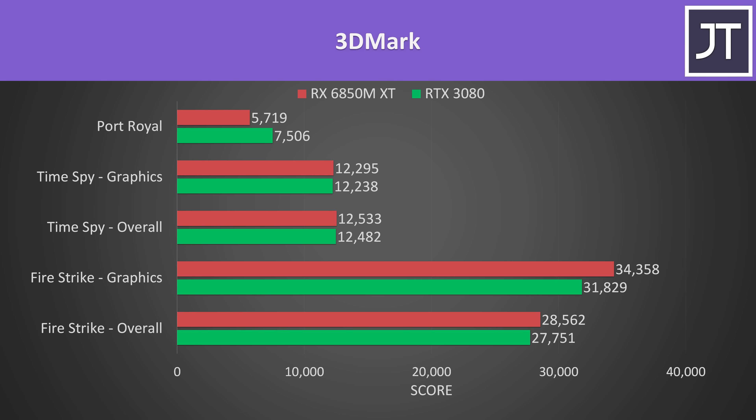The 3DMark results don't really match up with what we saw in the games. In Firestrike and Timespy the RX 6850M XT was ahead, though it had lower ray tracing performance compared to the 3080 in the Port Royal test. At 1080p the RTX 3080 was about 9% higher than the 6850M XT in the gaming results. When I previously compared the 3080 against the 6800M I found they were basically equivalent on average at 1080p, so you'd expect the 6850M XT to easily beat the 3080 — not be behind. So why is the higher tier 6850M XT worse?